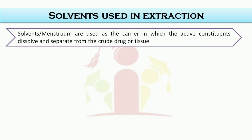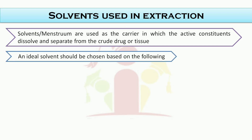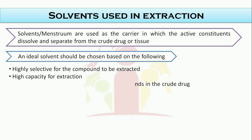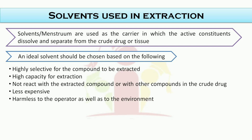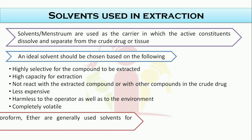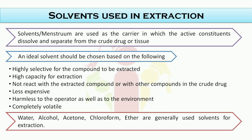Solvents used in extraction: the solvents or menstruum are used as the carrier in which the active constituents dissolve and separate from the crude drug or tissue. An ideal solvent should be chosen based on the following: highly selective for the compound to be extracted; high capacity for extraction; should not react with the extracted compound or with other compounds in the crude drug; less expensive and harmless to the operator as well as the environment; and finally, it must be completely volatilized. Water, alcohol, acetone, chloroform, and ether are generally used solvents for extraction.